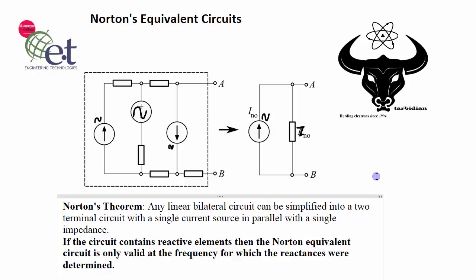One thing that should be noted here since we're dealing with AC circuits is that if the circuit contains reactive elements, in other words inductors or capacitors, then the Norton equivalent circuit is only valid at the frequency for which the reactances were determined.